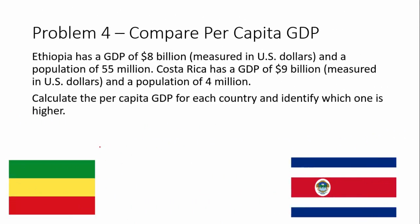Now we're going on to problem four. We're going to be doing per capita GDP so we can compare countries. Ethiopia has a GDP of $8 billion measured in U.S. dollars. It's important that everything is measured in the same currency to compare countries — you have to convert them all over, comparing apples to apples. GDP is $8 billion and the population of Ethiopia is 55 million. Costa Rica has a GDP of $9 billion and a population of 4 million. We're supposed to calculate the per capita GDP of each country and identify which one is higher.